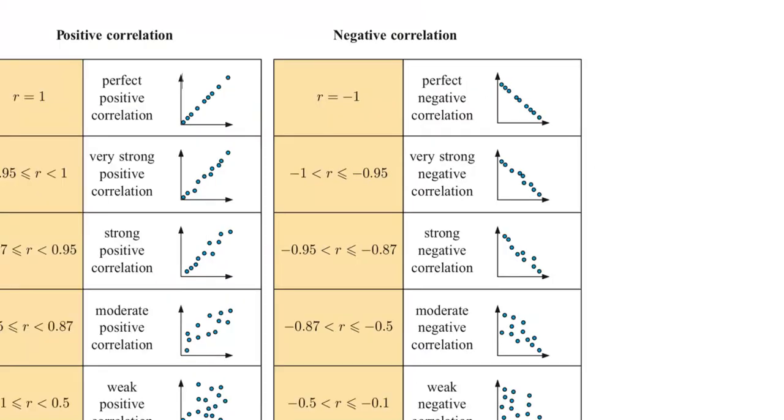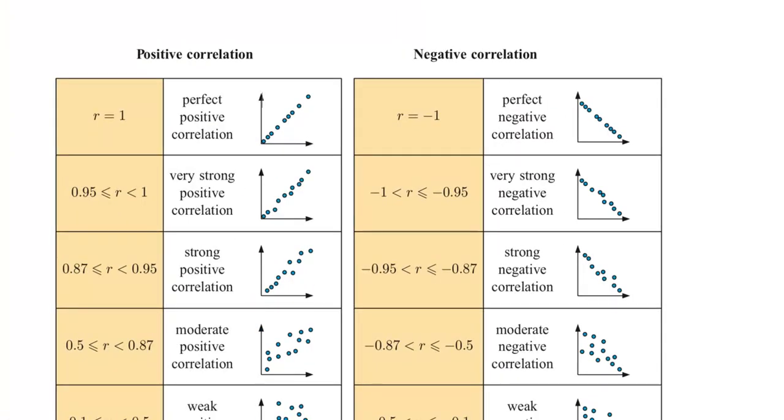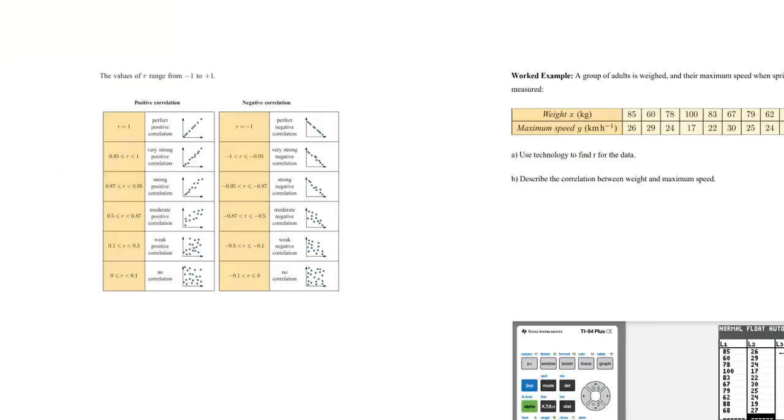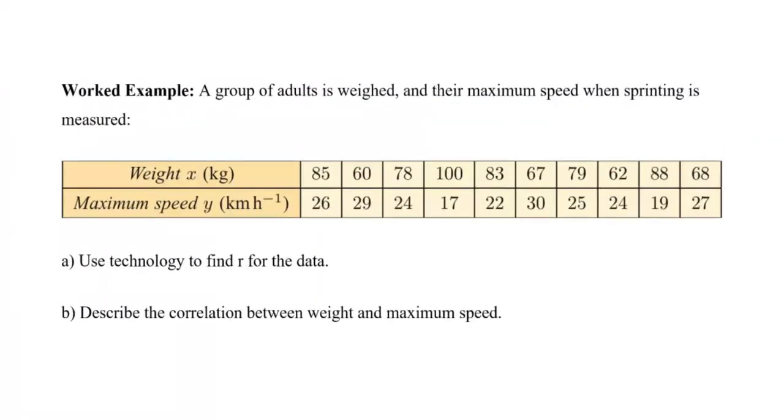So, if we can work out this Pearson number, then what we can do is we can compare different scattered diagrams to see how things are correlated, and without even drawing the diagram, we'll know the relationship between our two variables that we're focusing on. So, let's just jump in and show you how to find this on the TI-84 calculator.